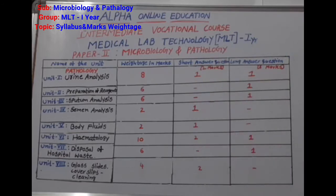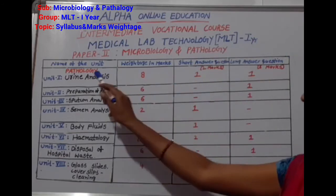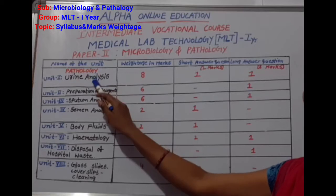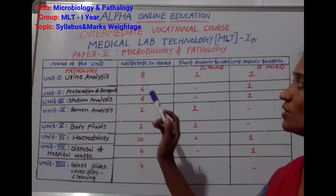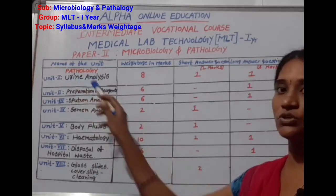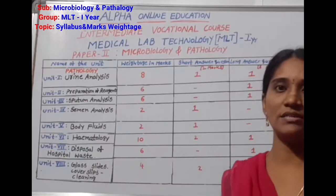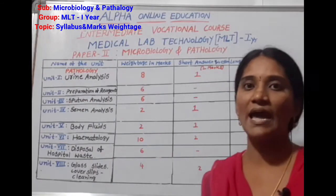In pathology we have eight units. The first unit is urine analysis.